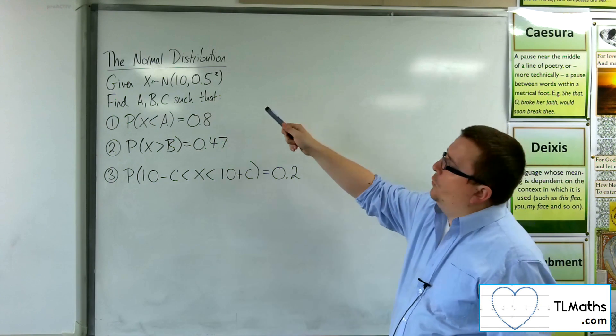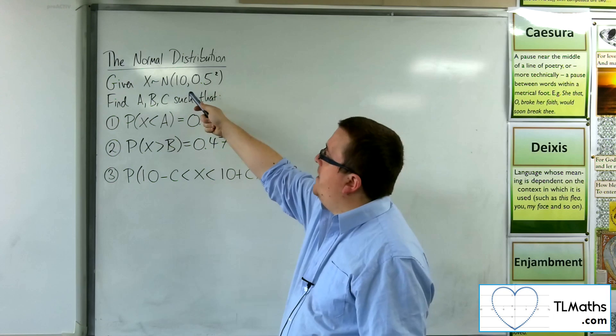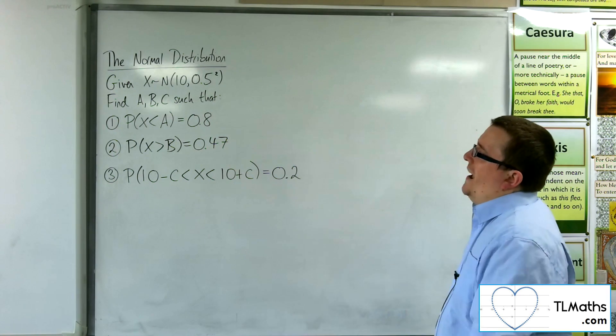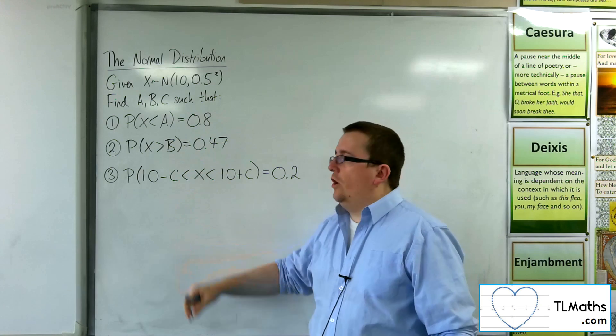Let's start with a normal distribution with a mean of 10 and a standard deviation of 0.5. And I want to find a, b and c in each of these cases.